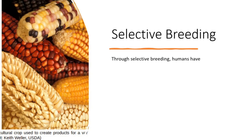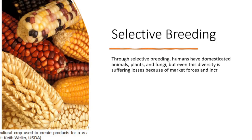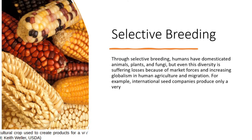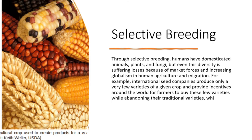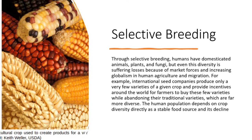Through selective breeding, humans have domesticated animals, plants, and fungi, but even this diversity is suffering losses because of market forces and increasing globalism in human agriculture and migration. For example, international seed companies produce only a very few varieties of a given crop and provide incentives around the world for farmers to buy these few varieties, while abandoning their traditional varieties, which are far more diverse.